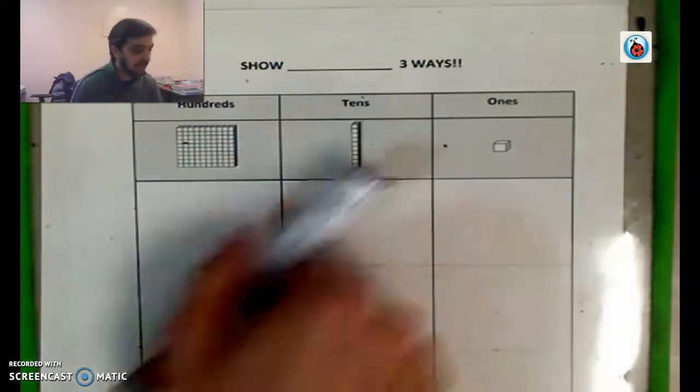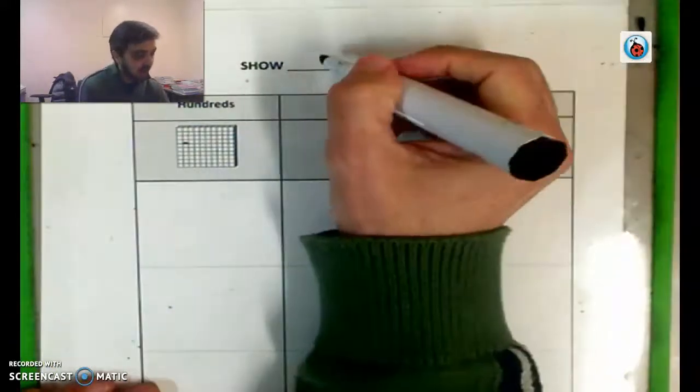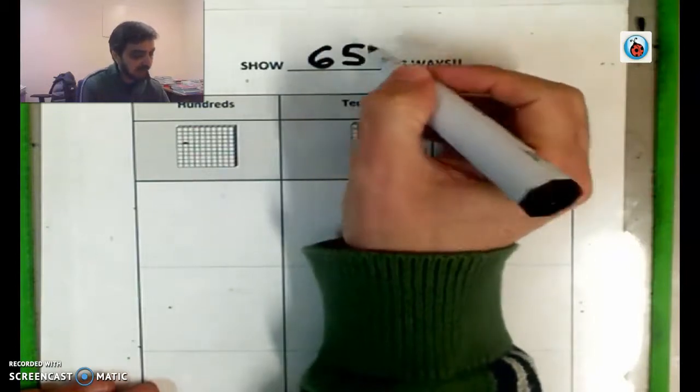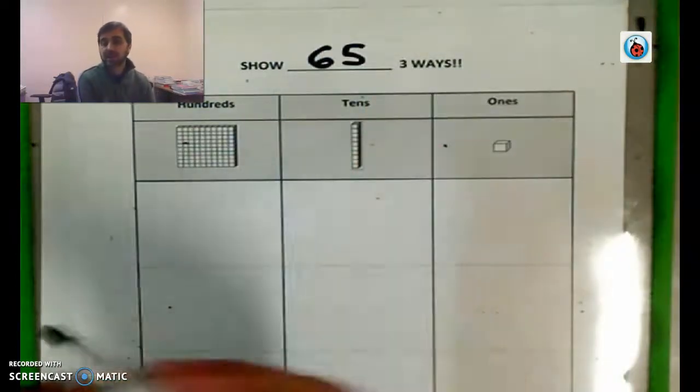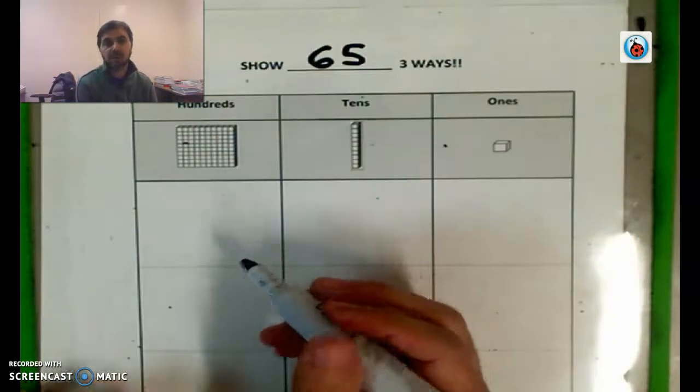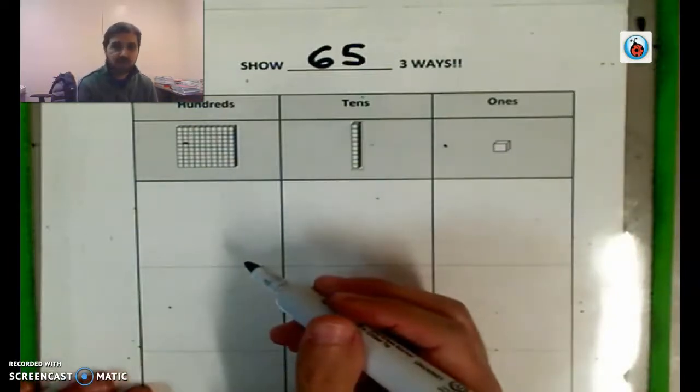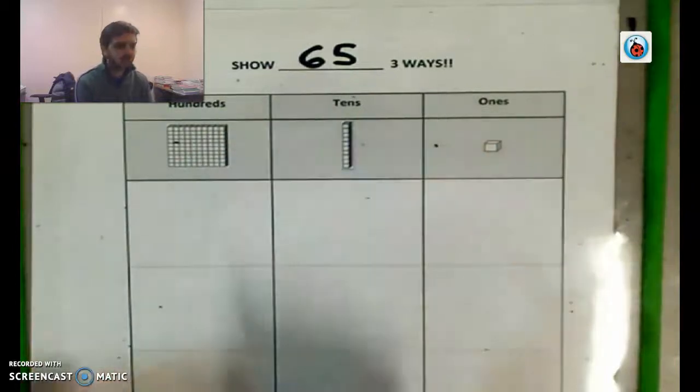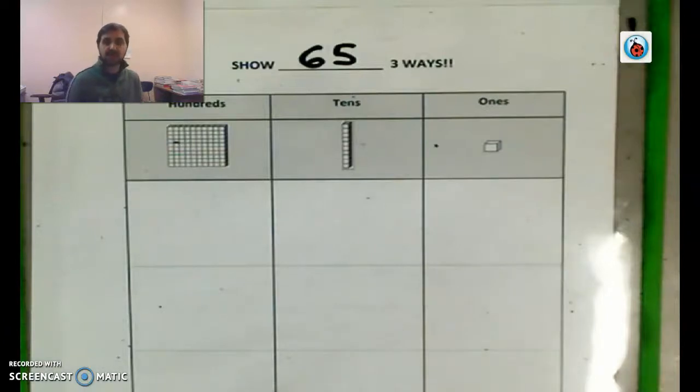All right. You should be all ready to go. So I'm going to give you, let's try the number 65. We'll do the first one together. Then I'll give you one or two to try on your own and we'll see how you do. So one way to show, actually, why don't you try and show 65 in one way? I think you can all do that. So do that now.